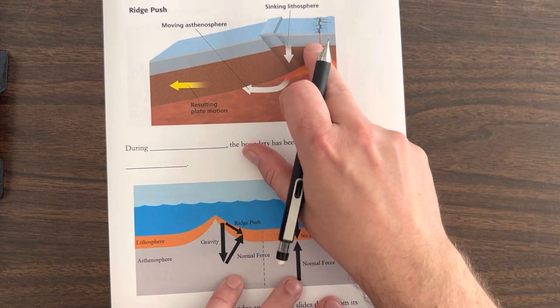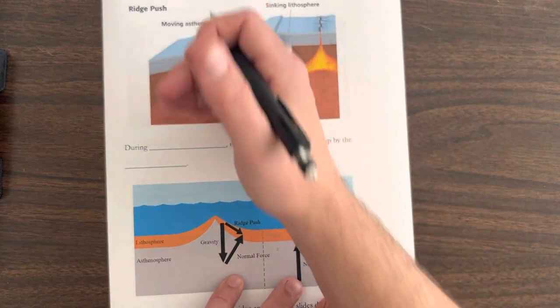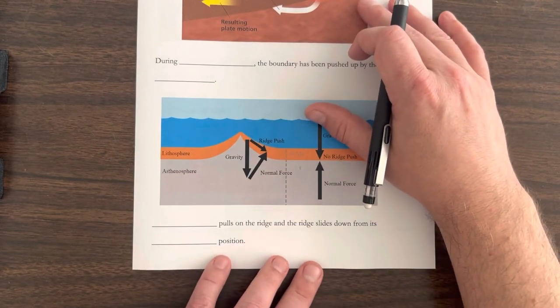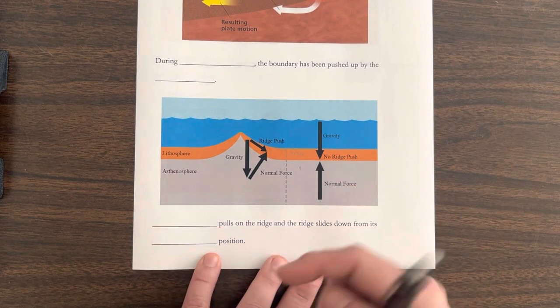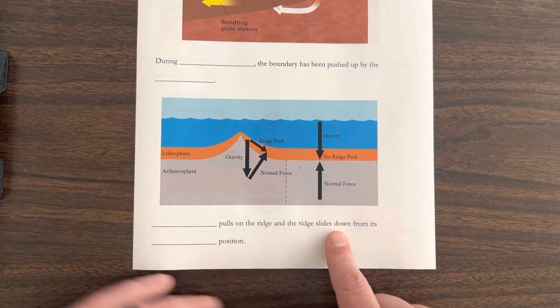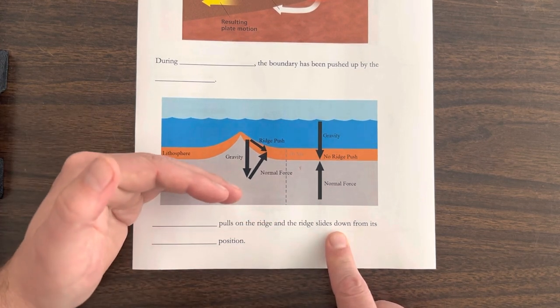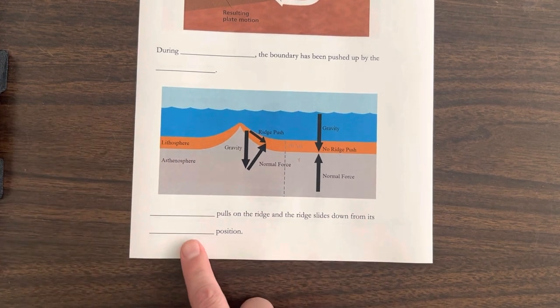Well, if that's raised up, gravity is still pulling down on everything here. So gravity pulls on the ridge, pulls down on the ridge, and the ridge slides down from its elevated position.